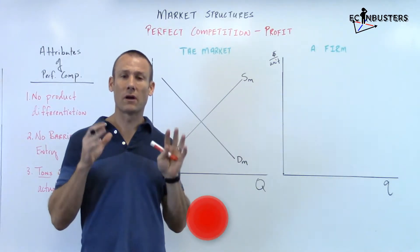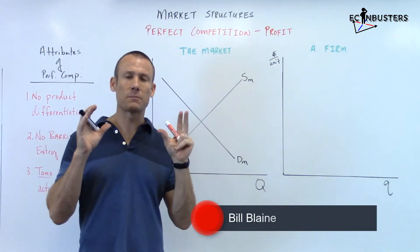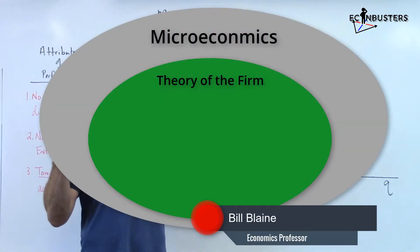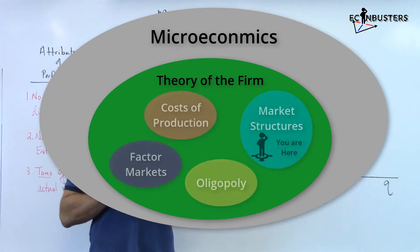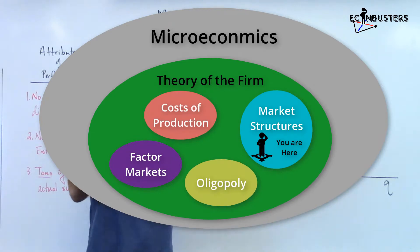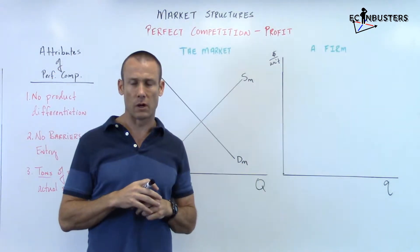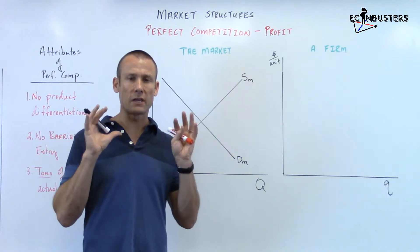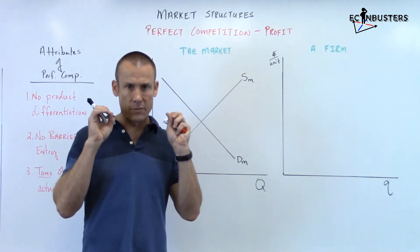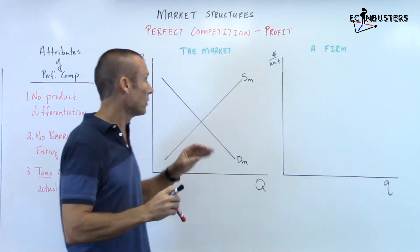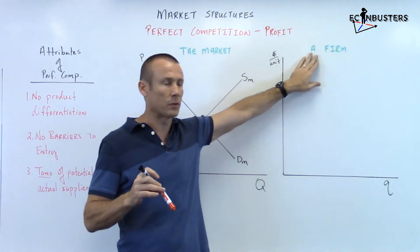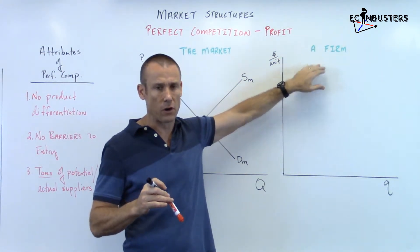Hey everybody, welcome back. We are underneath a subsection of microeconomics called theory of the firm. Inside that there's a unit called market structures, and then a subunit called perfect competition, which is the type of market structure we're on. We're taking a very close look at perfect competition — looking at the market, but ultimately we want to know things about the firm.